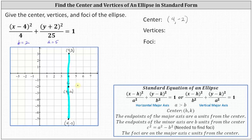Because the minor axis is a horizontal axis, to find the endpoints we add and subtract b, or add and subtract two, to the x-coordinate of the center. Adding two to the x-coordinate: four plus two is six, so (6, -2) is the right endpoint of the minor axis. Going back to the center and subtracting two: four minus two is two, so (2, -2) is the other endpoint of the minor axis.